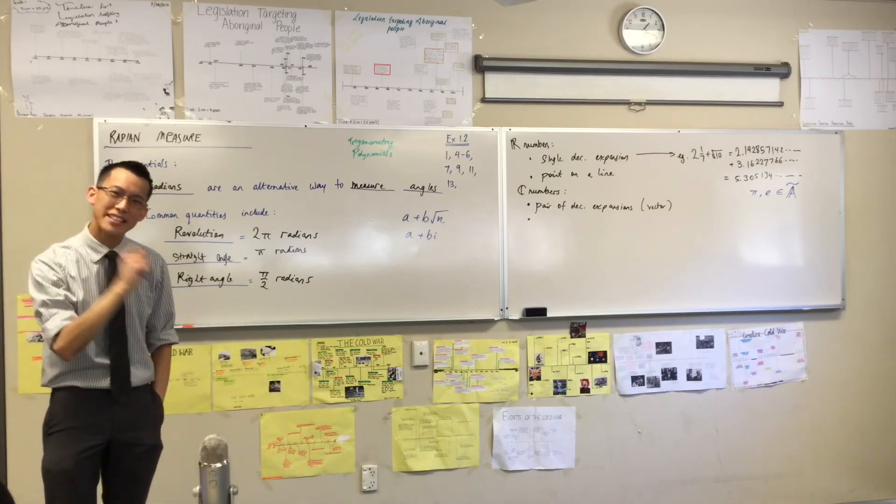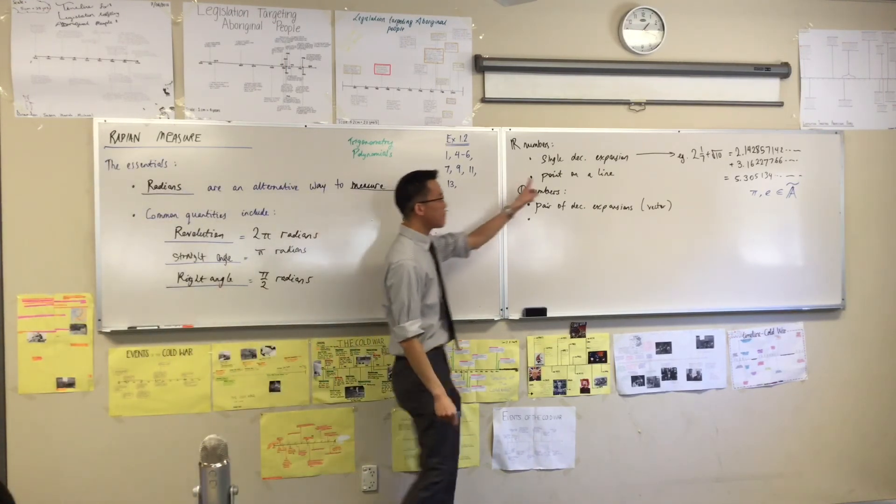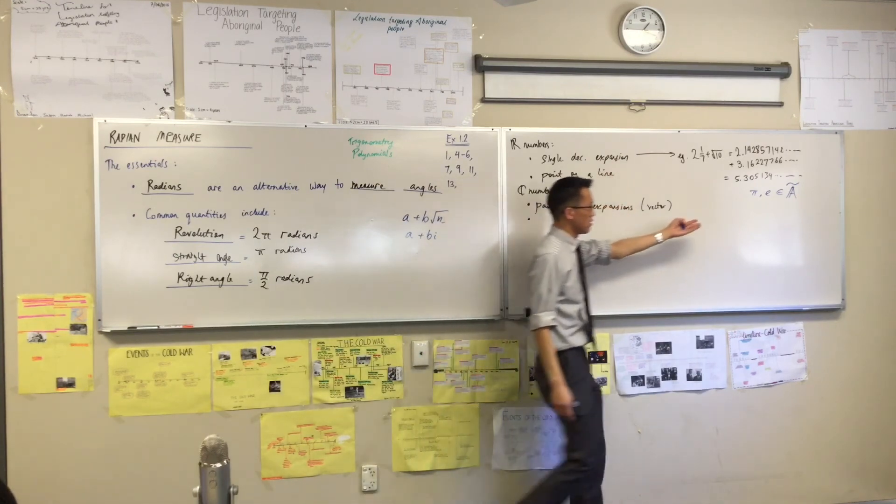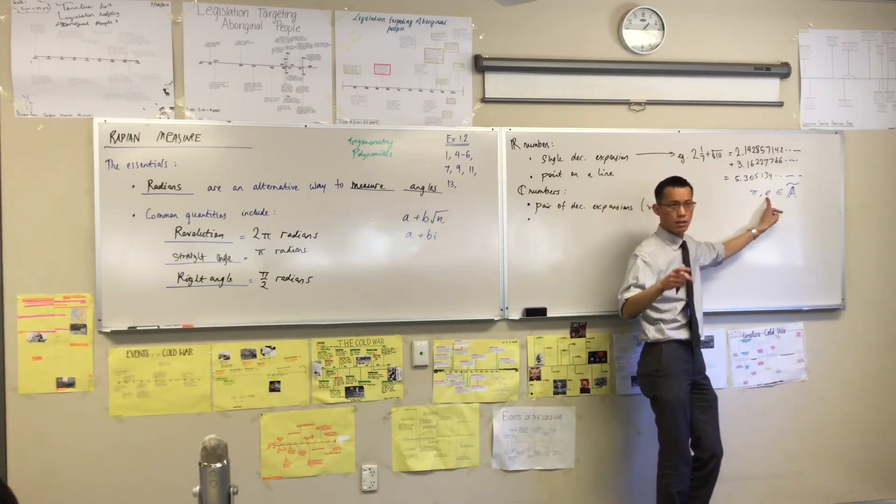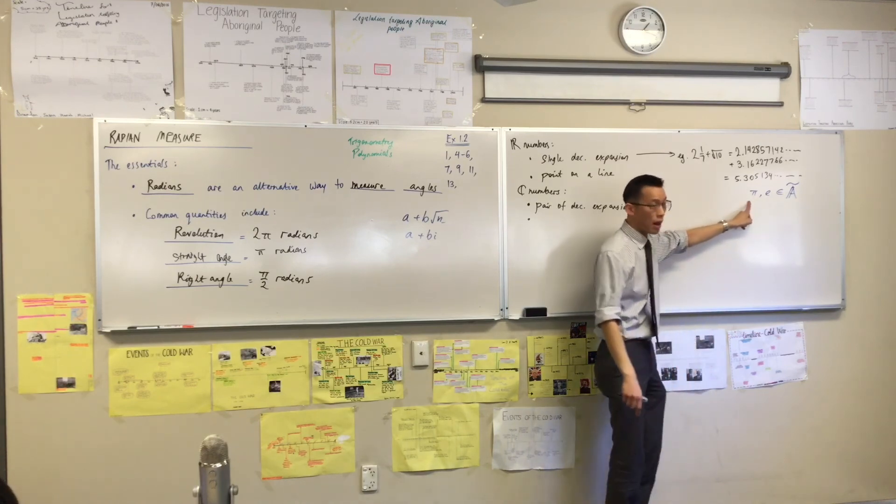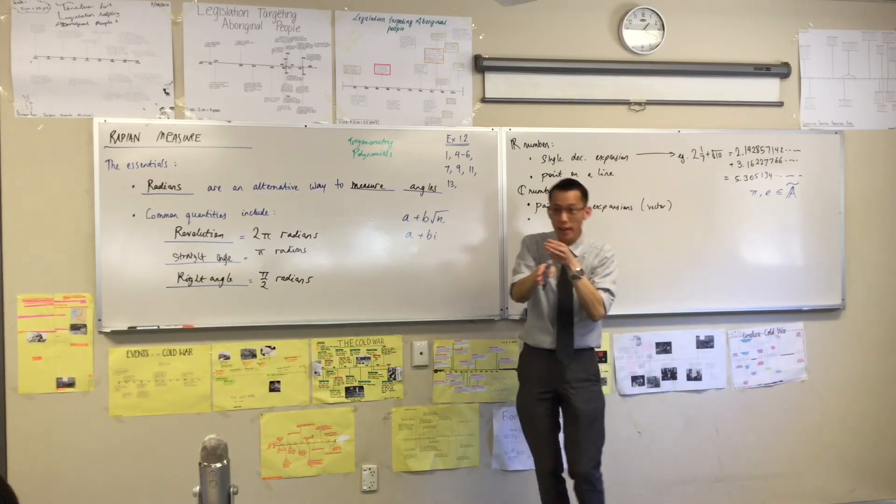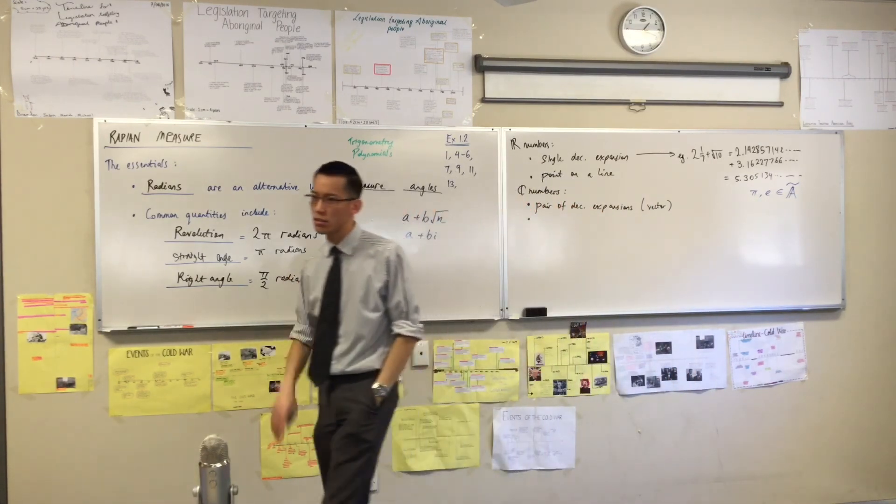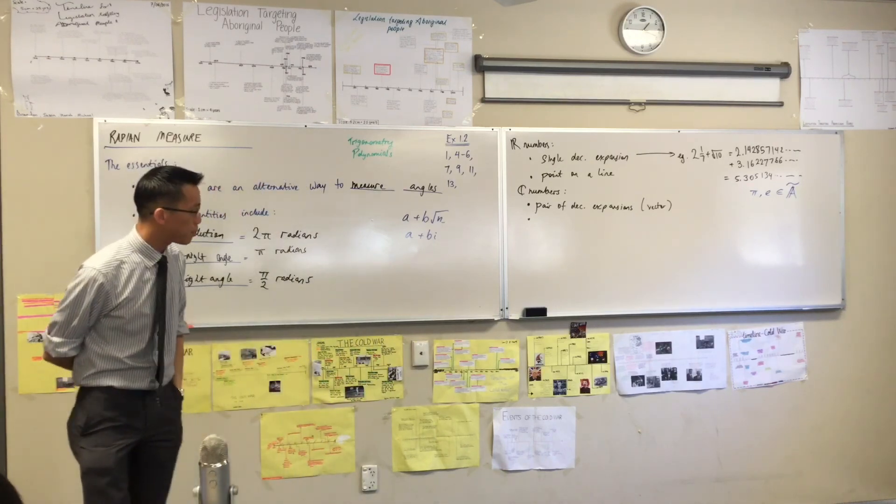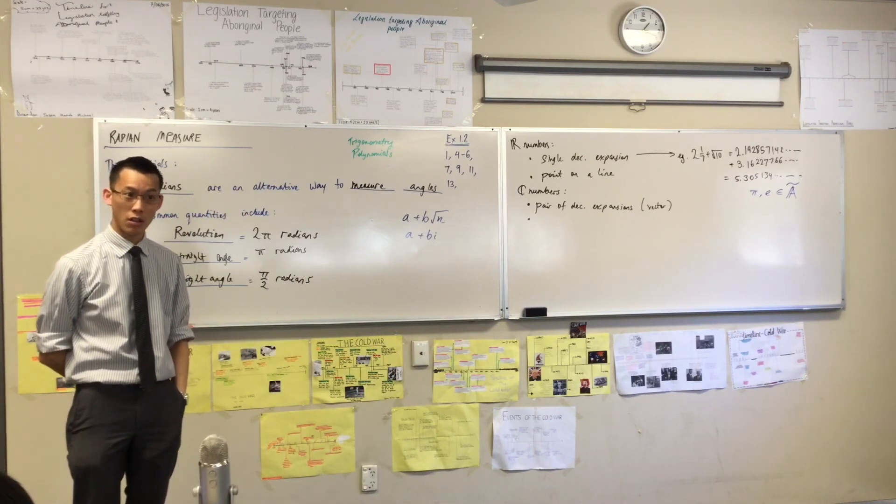Now, even the transcendental numbers, you can represent as a point on a line. They're there, right? E is between 2 and 3. And pi is between 3 and 4. It's in there somewhere. But you can't do it with the complex numbers. You can't place the complex numbers just as a point on a line.